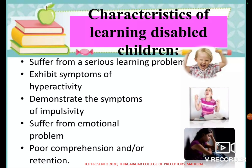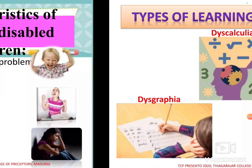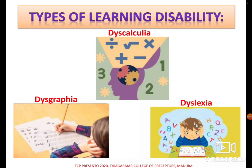Let's see what the characteristics of learning disabled children are. When people suffer from learning disabilities you can see these symptoms: they suffer from serious learning problems and can't learn things easily. They exhibit symptoms of hyperactivity — they always move around and do a lot of things. They demonstrate impulsivity, suffer from emotional problems, and have poor comprehension or retention — they understand very little and remember very little.